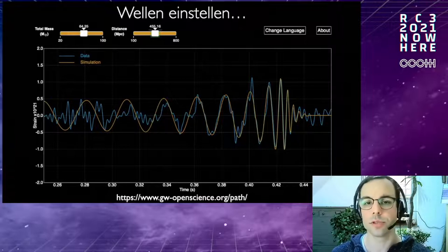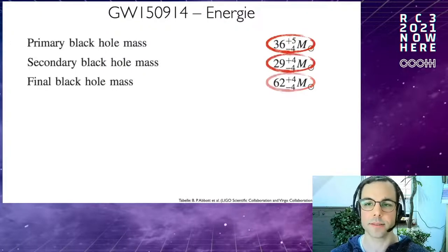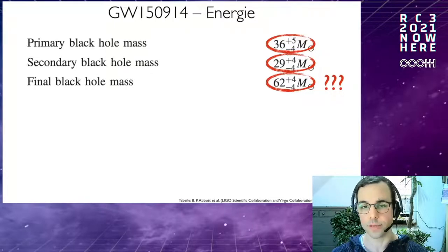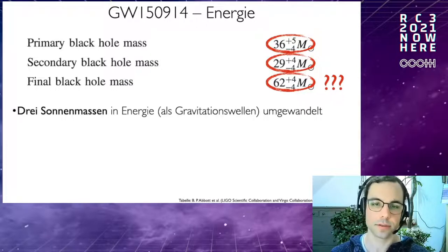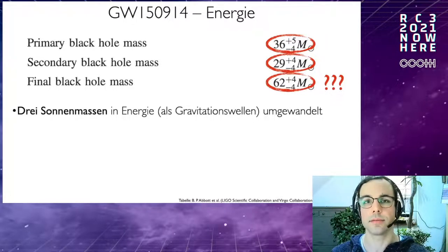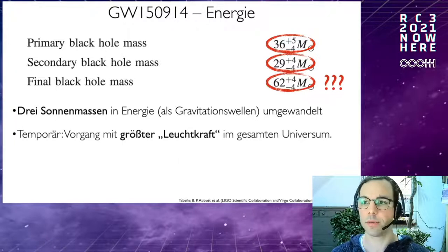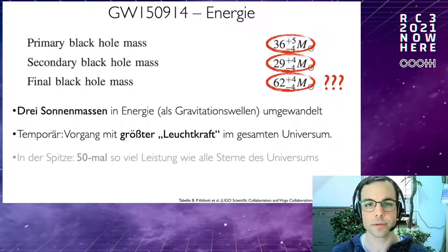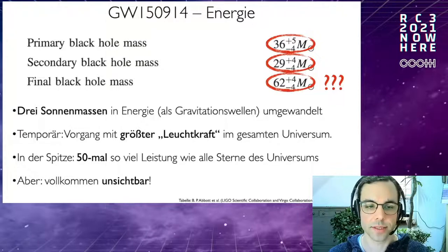Though the signal strain is only 10^-21, the energy involved is staggering. From the paper: the first black hole plus the second black hole should equal the final black hole mass — but about three solar masses are missing. Those three solar masses were radiated as gravitational waves in just 0.2 seconds, according to E=mc². This event was the highest-luminosity event in the entire universe — at peak, radiating 50 times the power of all stars in the universe combined — yet completely invisible except to our detectors.